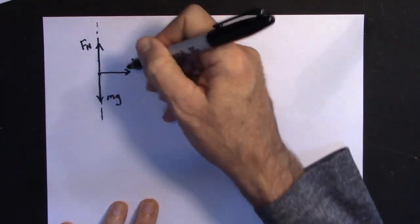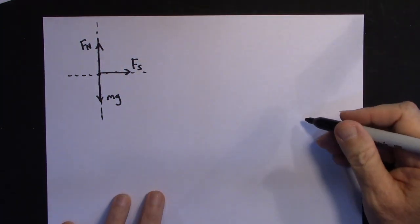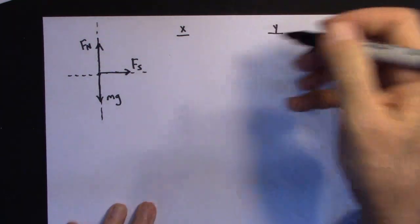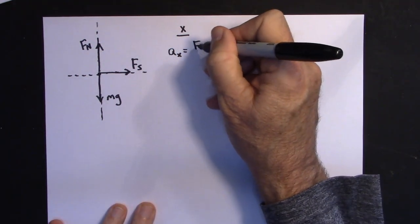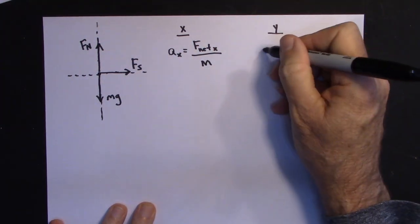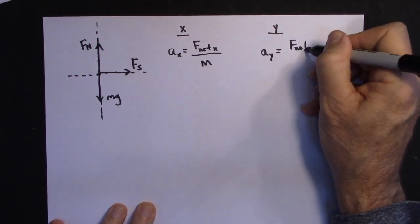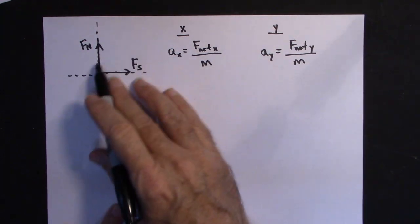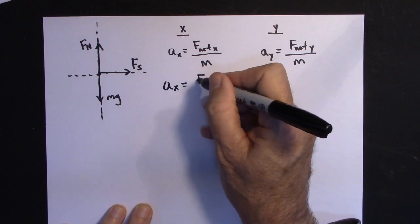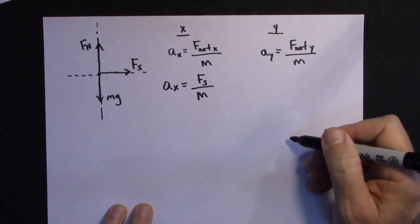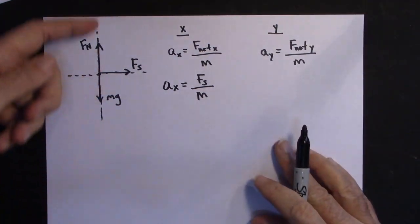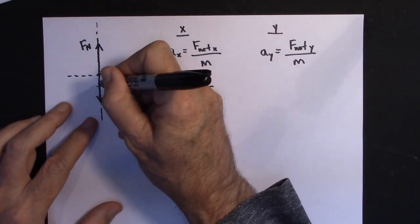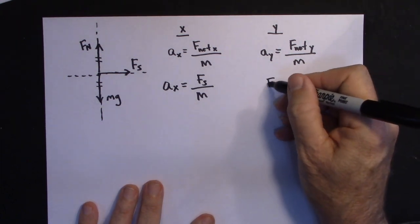We don't need to break forces into components since they're already in x and y directions. Applying Newton's second law: A sub X equals net force in X over mass, and A sub Y equals net force in Y over mass. In the X direction, the only force is static friction, so A sub X equals the force of static friction over mass. A sub Y is zero since there's no vertical acceleration, so Fn equals Mg.